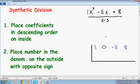So now what we want to do on the outside is place the opposite number in the denominator. So notice how we have a negative 3 in the denominator. So on the outside, we want to place a positive 3.